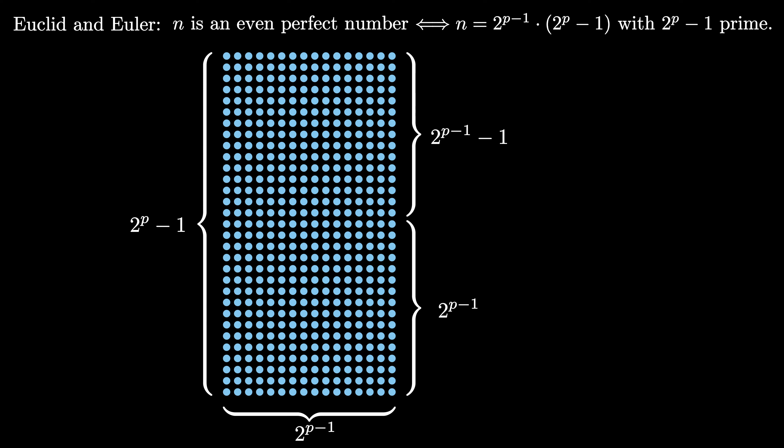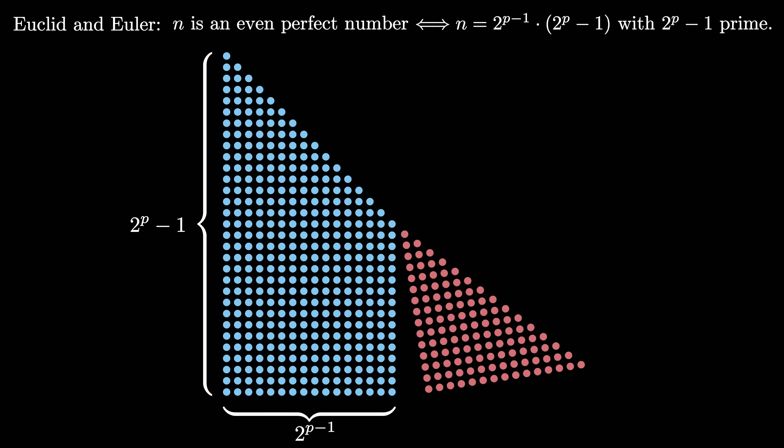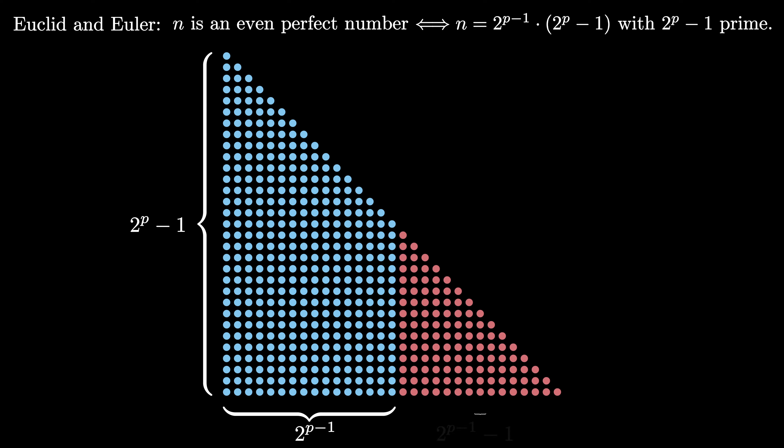Now consider the triangular array with base of length 2 raised to the p minus 1 minus 1 sitting in the upper right of this rectangle. We can swing this array down, forming a larger triangular array.